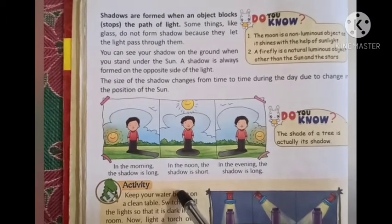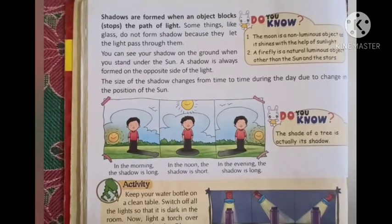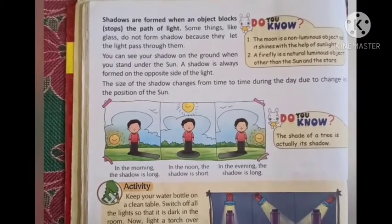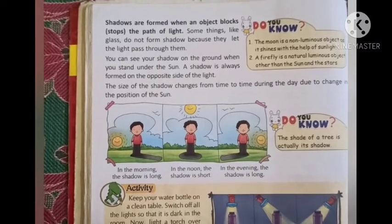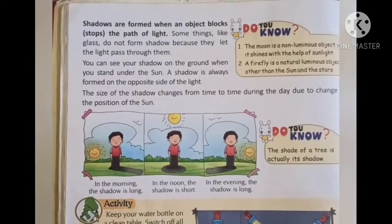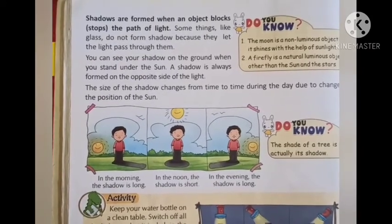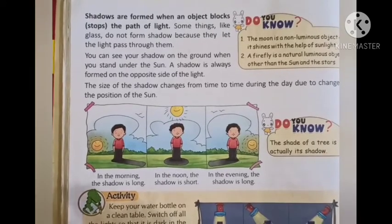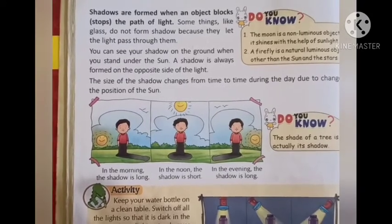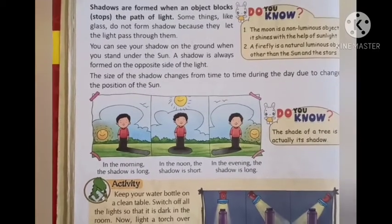A shadow is always formed on the opposite side of the light. The moon which shines in the sky during night time is a non-luminous object — the moon does not have light of its own, but it takes light from the sun. A firefly is a small insect which has light of its own; in Marathi we call it kazwa. The sun and the stars also have light of their own, so they are considered natural luminous objects. But the moon is a non-luminous object.